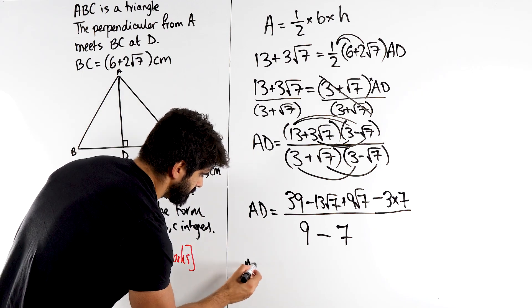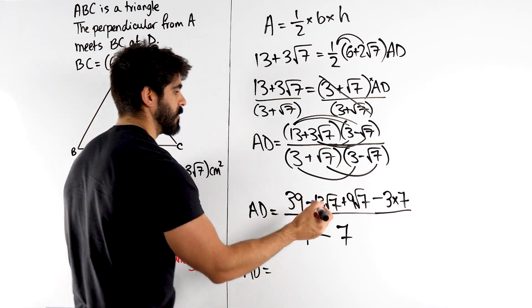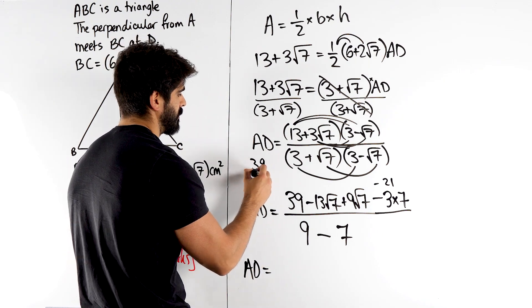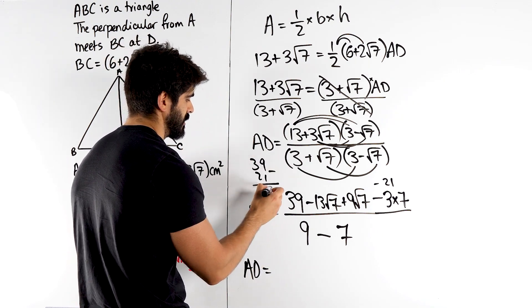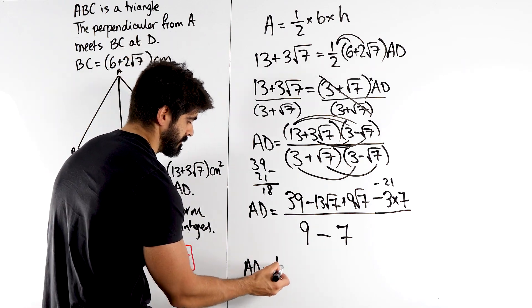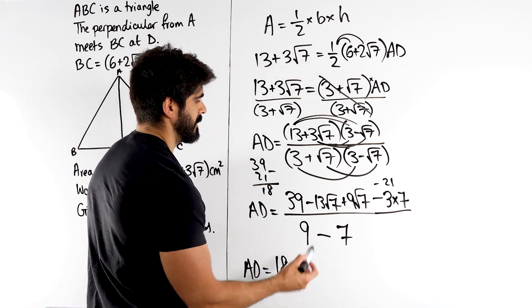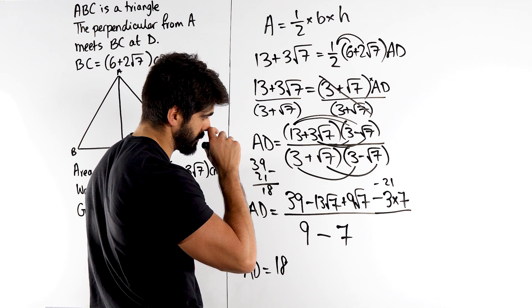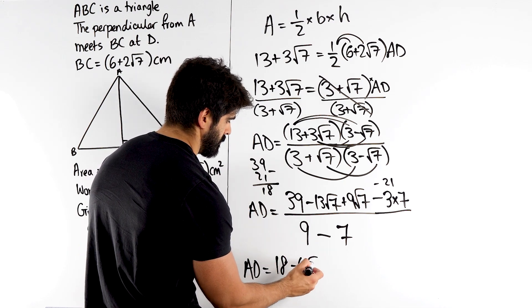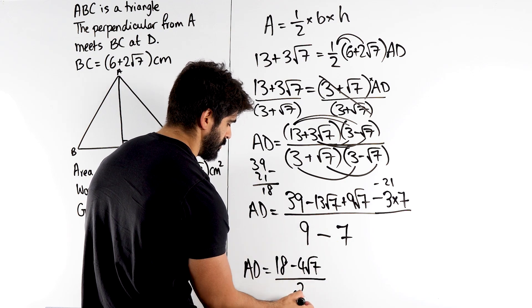So AD now. You can simplify up here as well. So we have 39, this and minus 21. Yeah, what's 39 minus 21? Before I make a silly mistake, which is not common, obviously. Yeah, so we have 18. Minus 13 plus 9. The difference between them is 4, right? So it'll be minus 4, root 7. All over 9 minus 7 is 2.